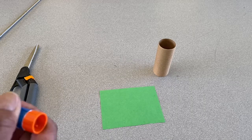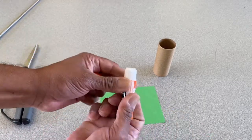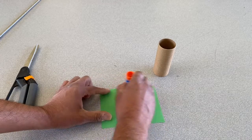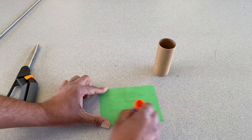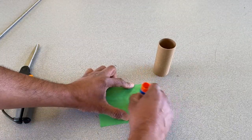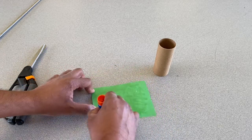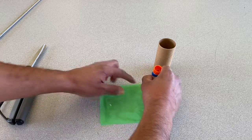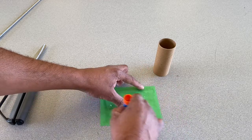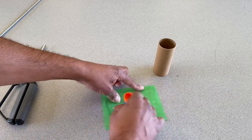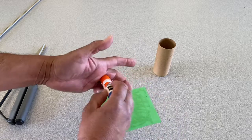For our next step, using your glue stick, you are going to spread the glue all around your tube wrap. Make sure you cover it from edge to edge. Throw on a thick layer, make sure it's nice and sticky.